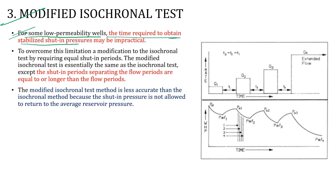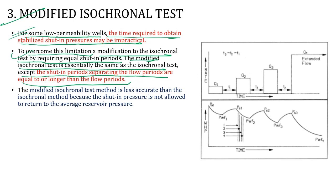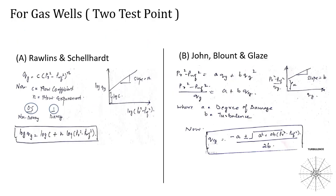The Modified Isochronal Test addresses cases where stabilized shut-in pressures take impractically long to obtain. It is essentially the same as the isochronal test, except shut-in periods are equal to or slightly longer than the flow periods — not waiting for full pressure stabilization. It is less accurate than the standard isochronal method because shut-in pressure does not return to true average reservoir pressure.